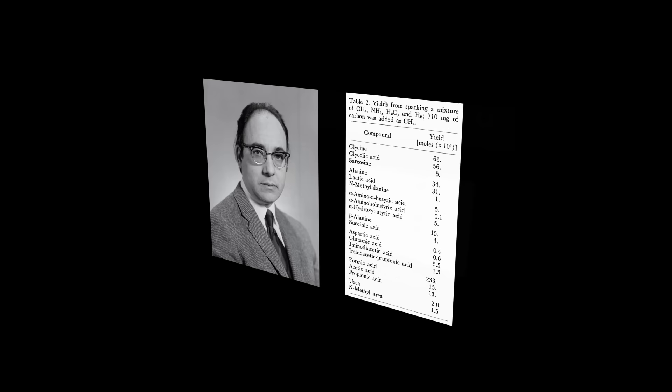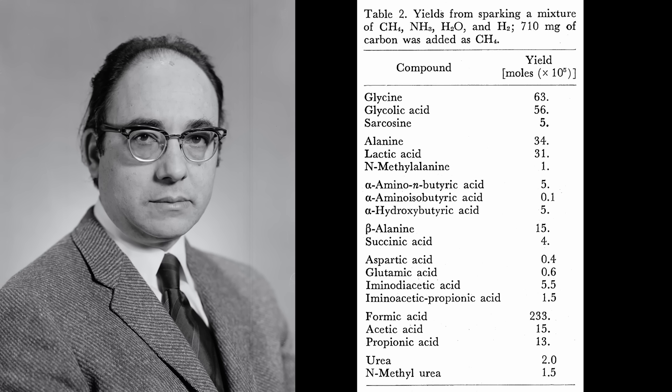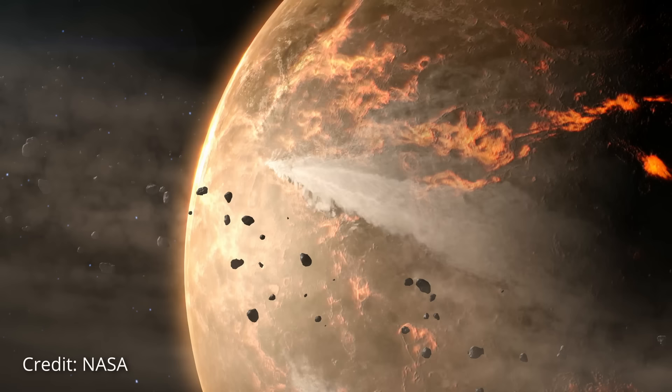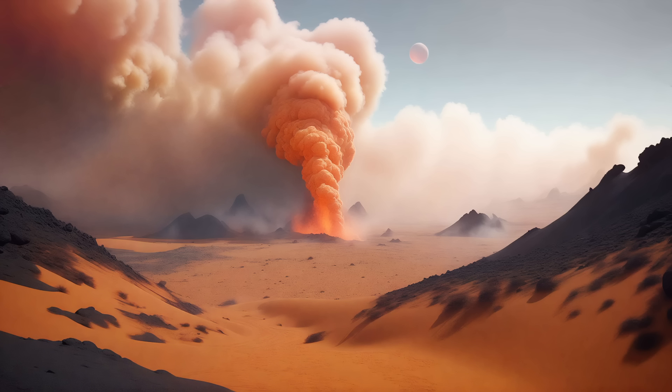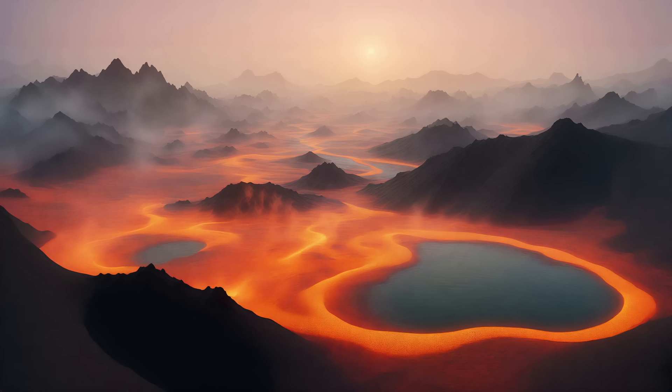Findings from the Miller-Urey experiment were initially somewhat controversial and generated specific discussions and debates within the scientific community. Some scientists argued that Miller's experiment oversimplified the complex and uncertain conditions of the early Earth. While Miller attempted to simulate the atmosphere as best as he could based on the knowledge available at the time, there was ongoing debate about the exact composition of early Earth's atmosphere.